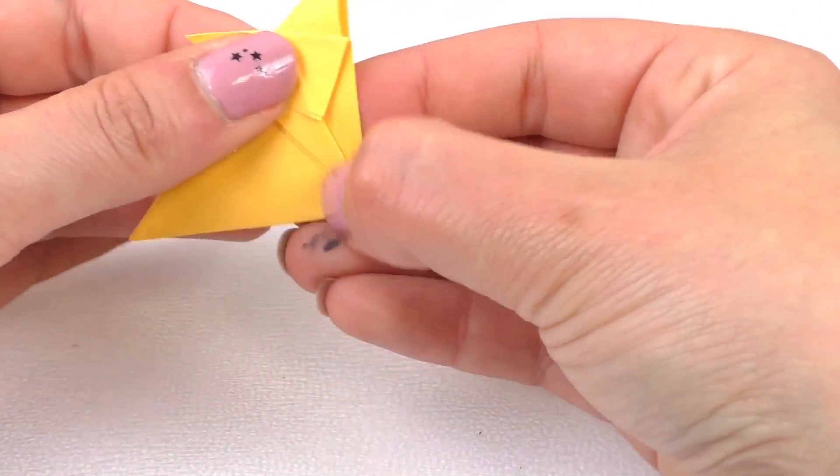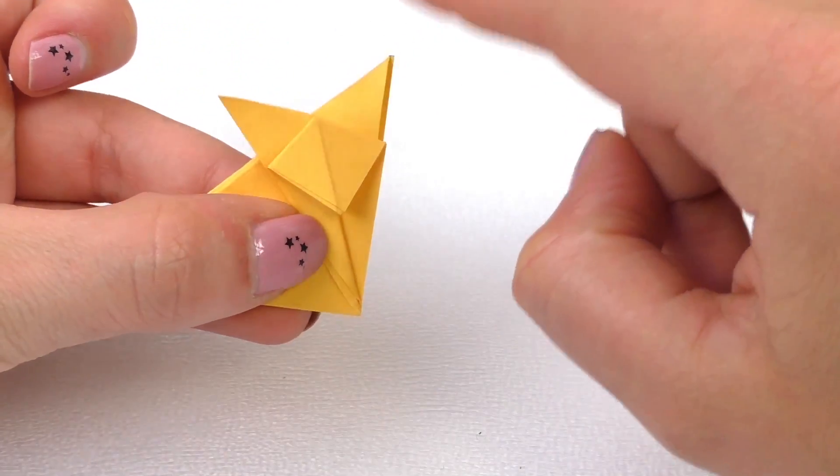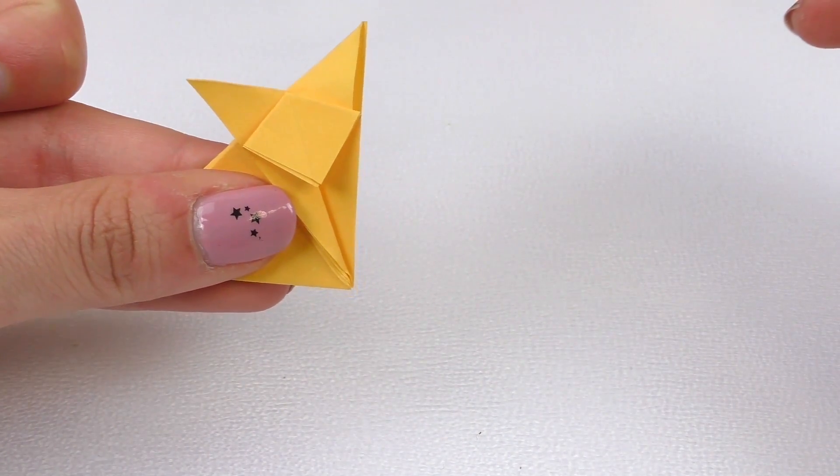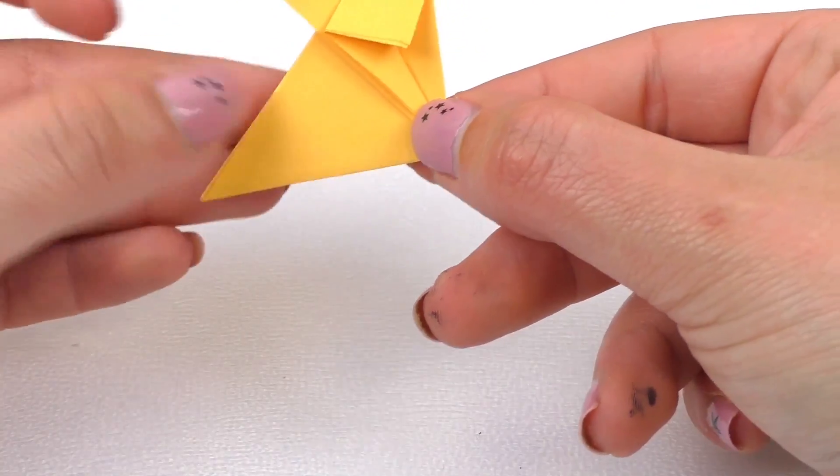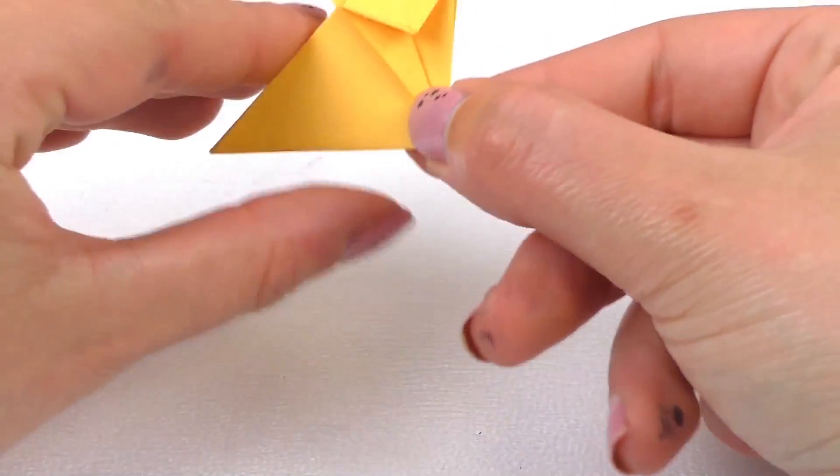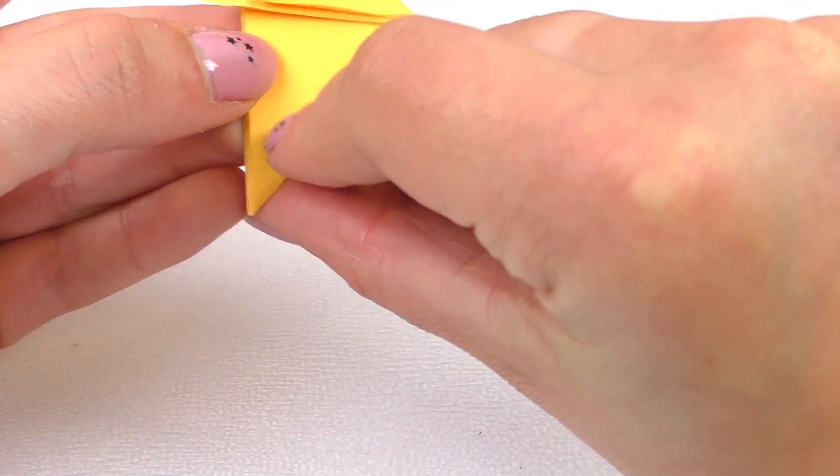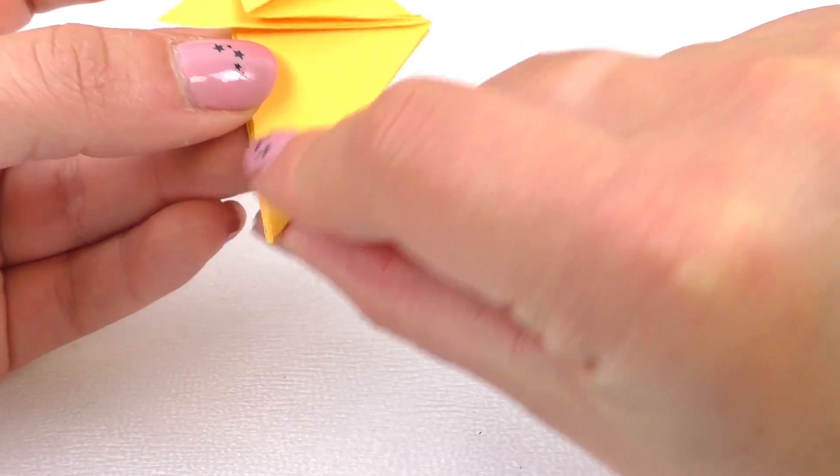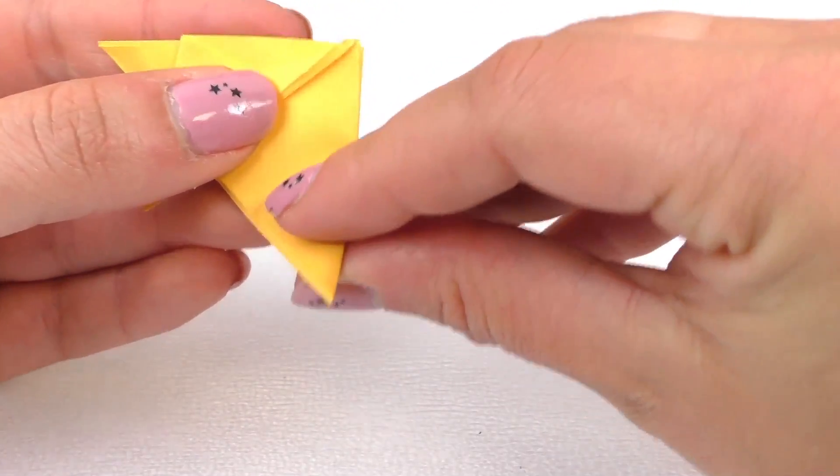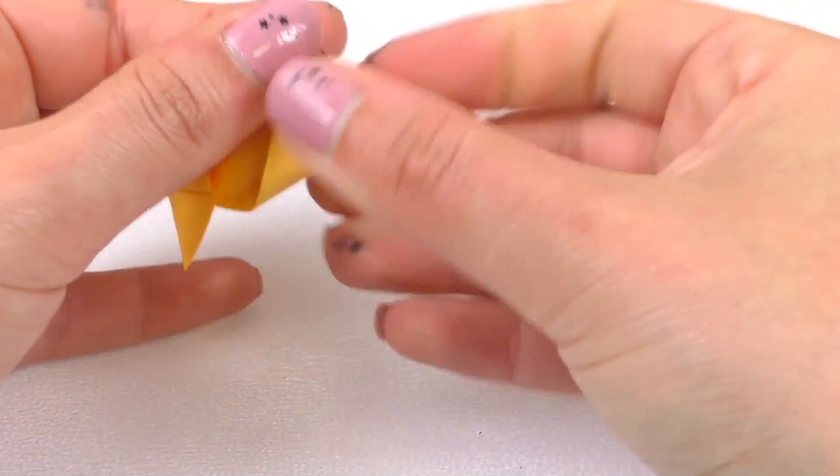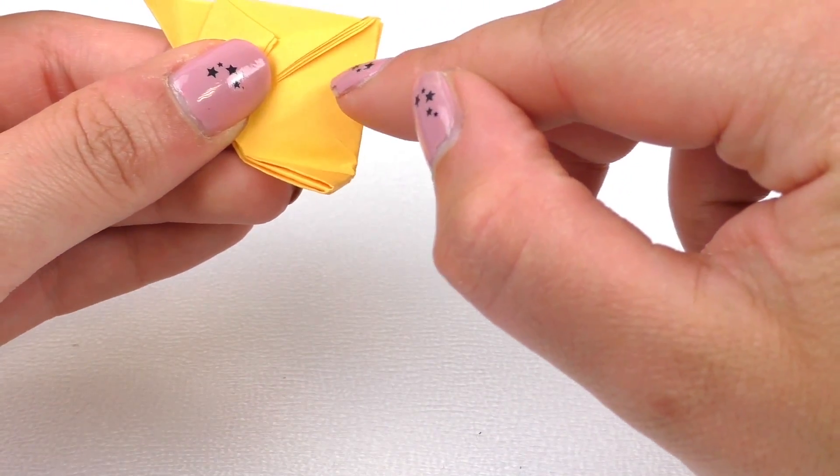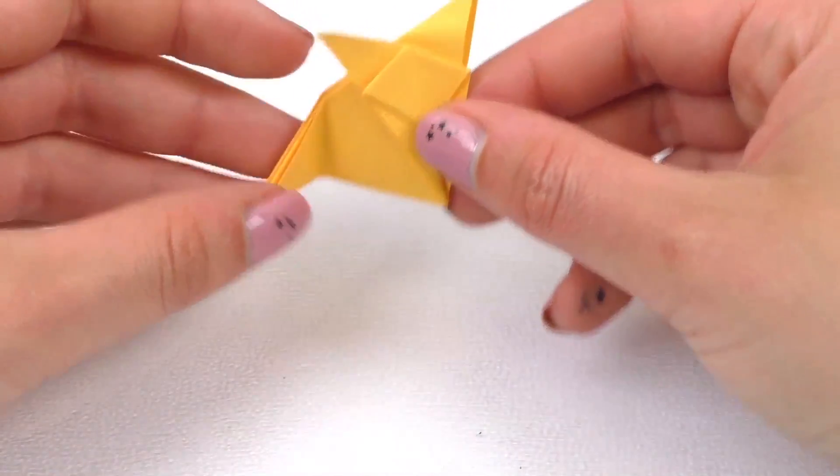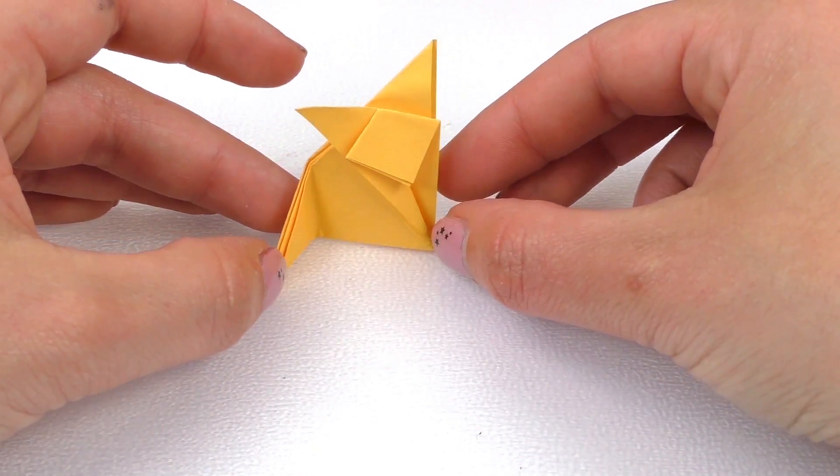And now we have the fox face. Those are the two ears and the face. Now we need the body. That part is the easiest part, because we are just going to make the tail. We're just going to fold the edge to the inside, just like this. Then we'll open it, unfold it. And here we go. This is our fox.